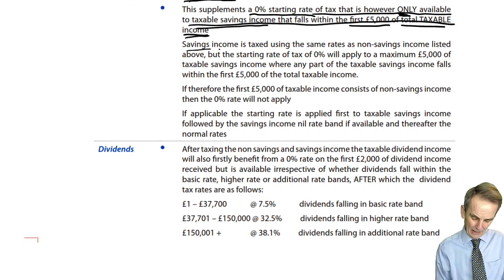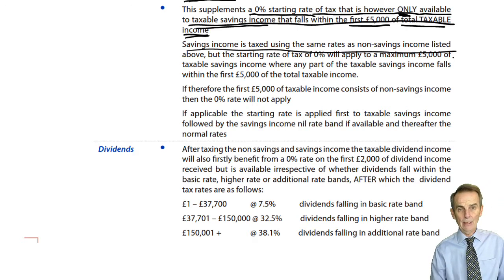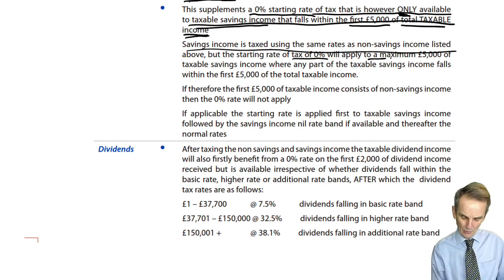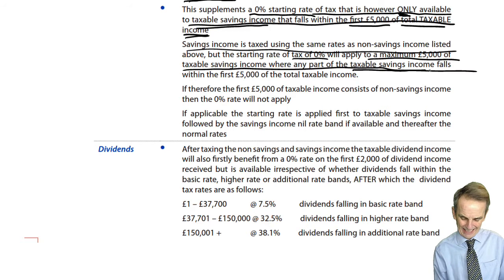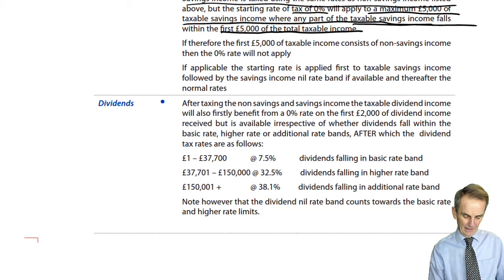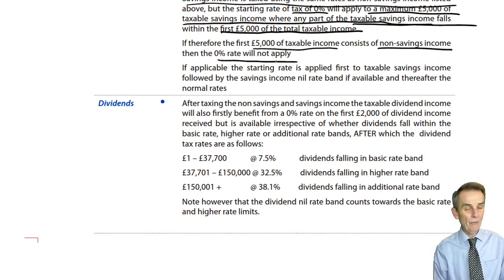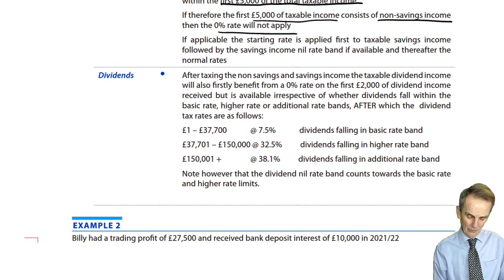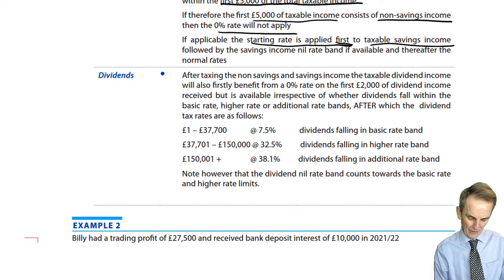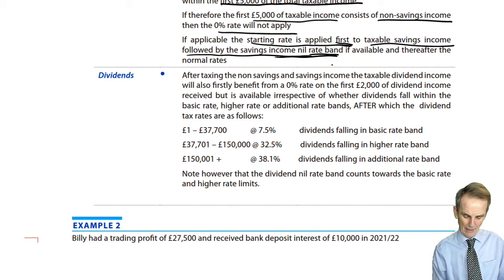Taxable savings income is taxed at the same rates as non-savings income: 20%, 40%, and 45%. That starting rate of 0% will apply to a maximum £5,000 of taxable savings income where any part falls within the first £5,000 of total taxable income. If the first £5,000 of taxable income consists of non-savings income, the 0% rate will simply not apply. If applicable, the starting rate is applied first to taxable savings income, followed by the savings income nil rate band, and thereafter the normal rates.